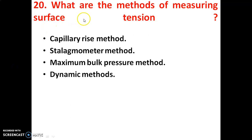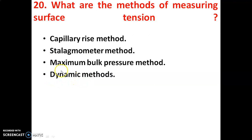What are the methods of measuring surface tension? The important methods are: the Capillary Rise method, the Stalagmometer method, the Maximum Bubble Pressure method, and Dynamic methods. These are used for the determination of surface tension.